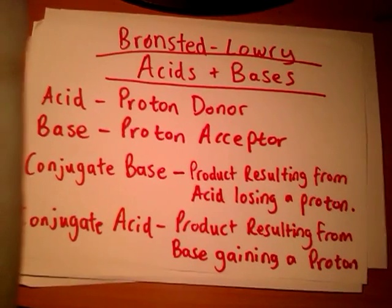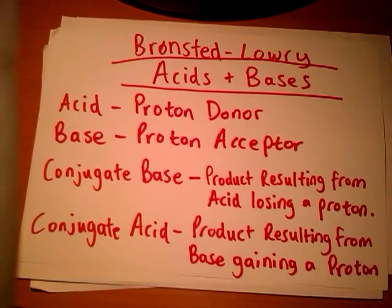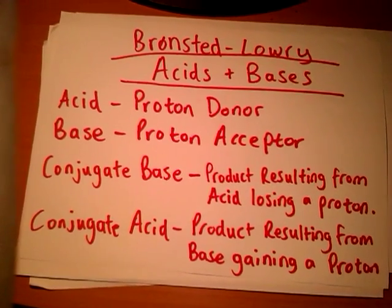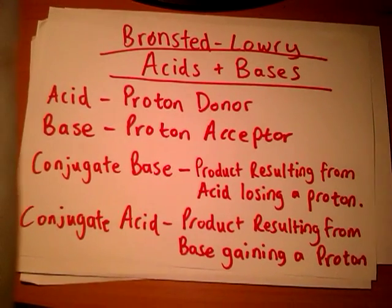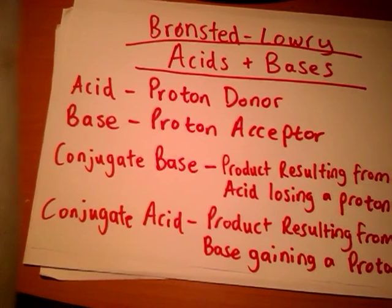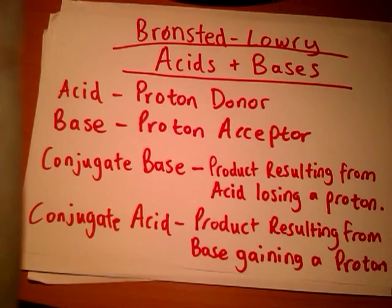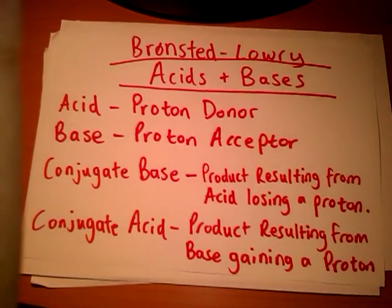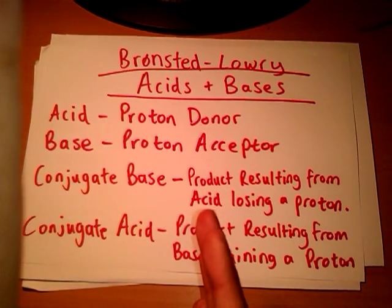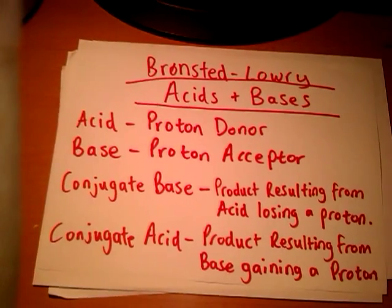You may see this in some of your exams — you'll be given an equation and you're going to have to identify which ones are the acids and bases and which ones are the conjugate bases and conjugate acids. The conjugate base is the product resulting from the acid losing a proton, and the conjugate acid is the product resulting from the base gaining a proton. The conjugate bases and acids will always be on the right side of the equation in most cases.